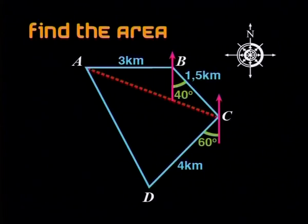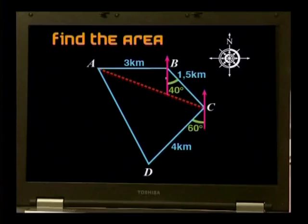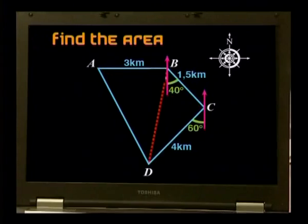I wouldn't know where to start. Well, if we're going to use some trigonometry, we can start by cutting the piece of land into two triangles. Perhaps we should join AC. That's a good start. Any reason why you suggested joining AC and not BD? Not really. Would BD have been better? No, both would have worked out fine in this case. So let's join AC for now.